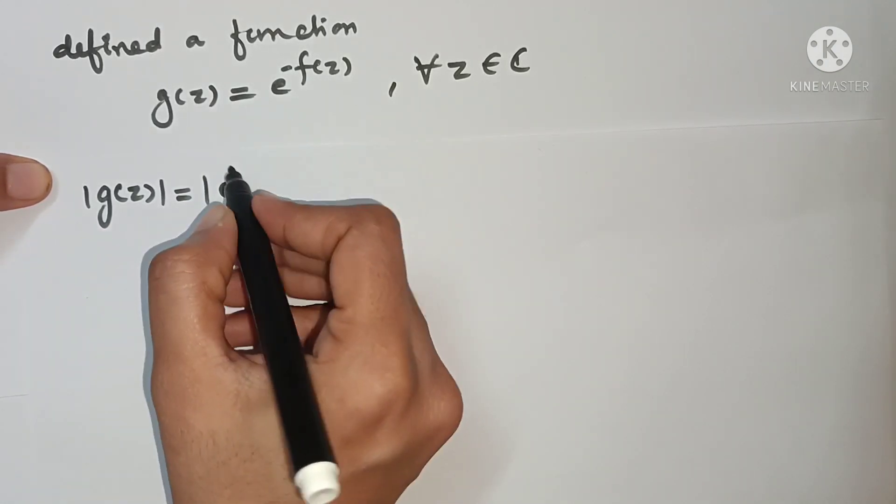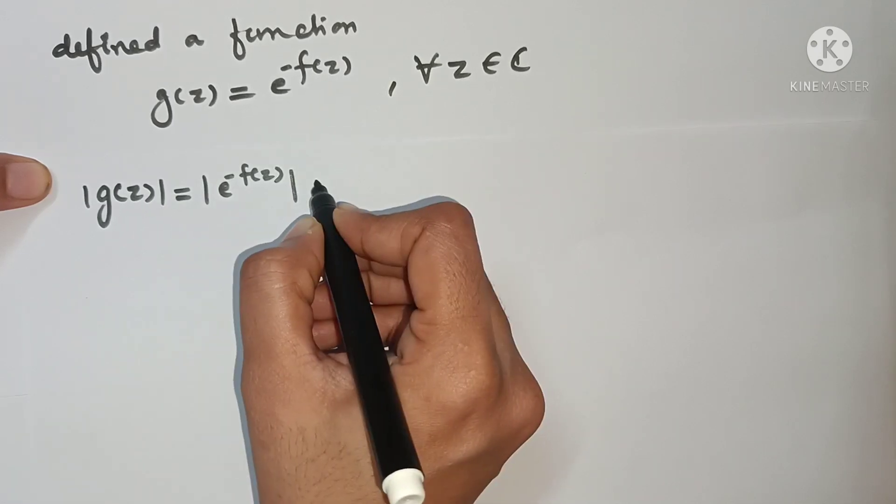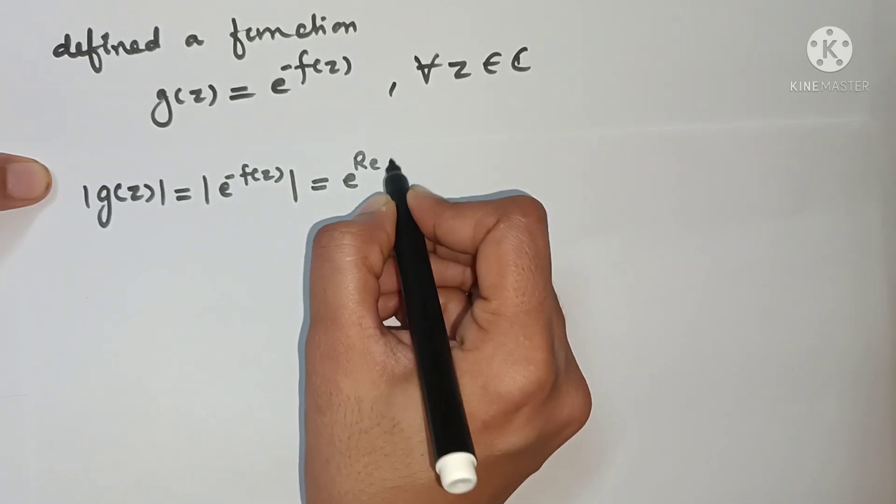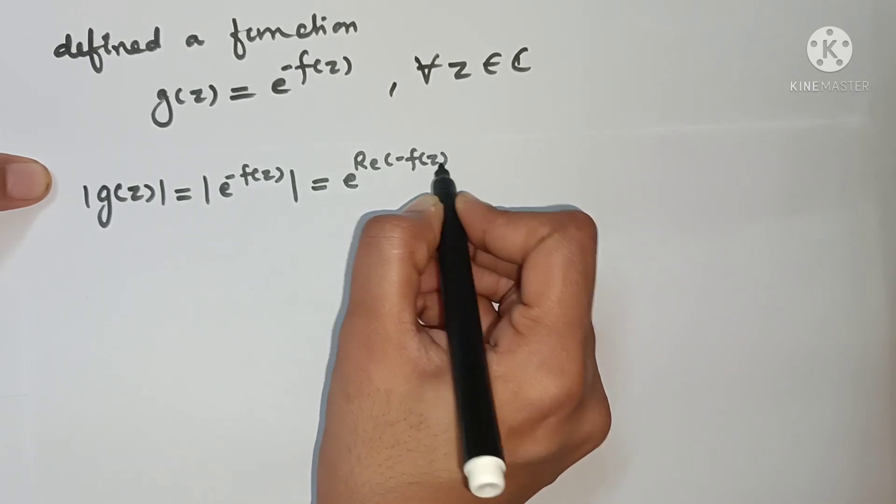e raised to minus F(z), and it is equal to e raised to the real part of minus F(z).